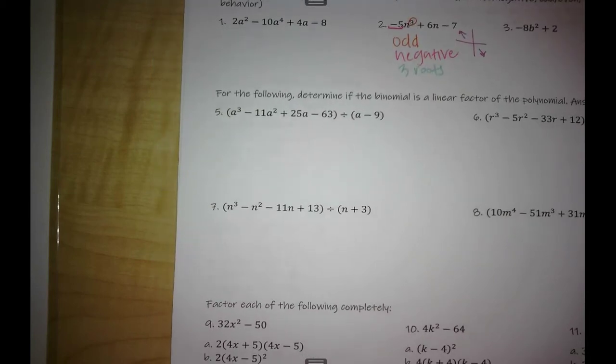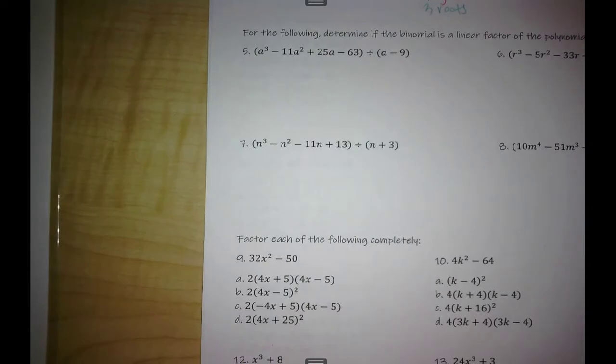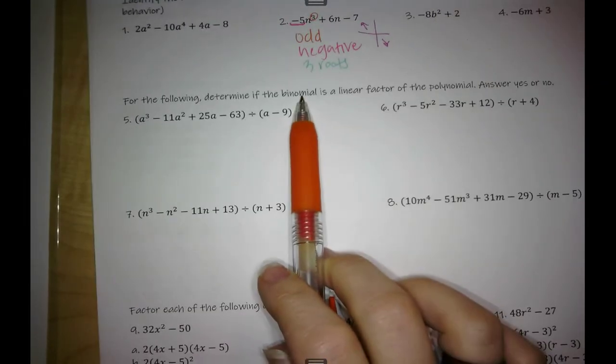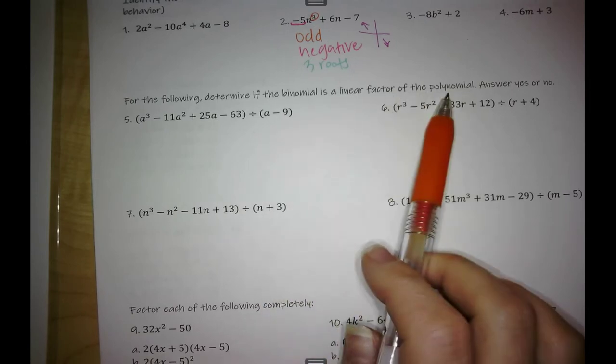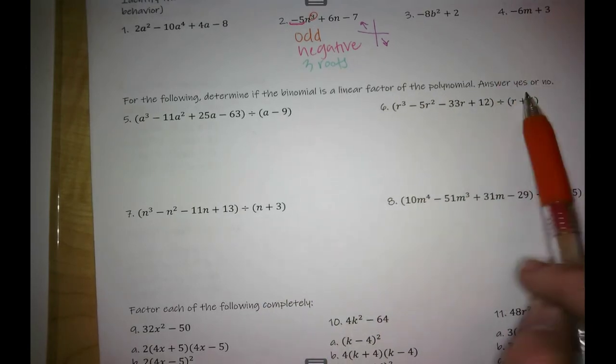Test 4.2 review. Let's look at question number seven. These instructions say for the following determine if the binomial is a linear factor of the polynomial. Your answer is going to be a yes or no.